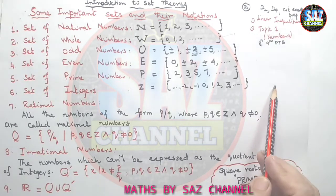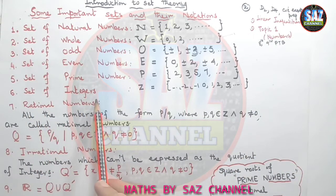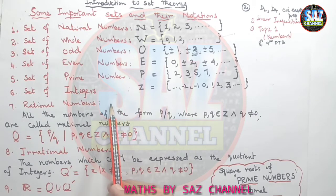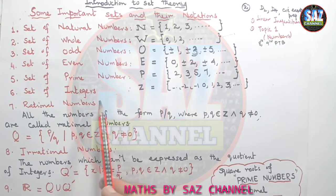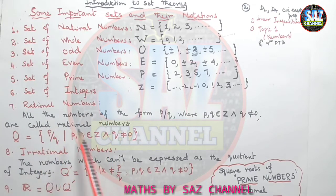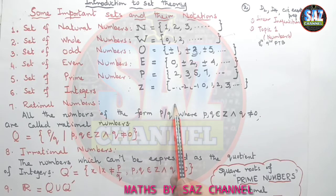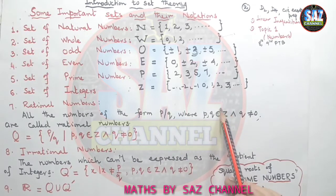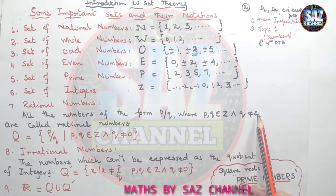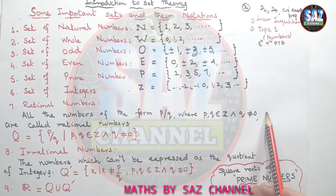Then coming to the next type of the numbers which are the rational numbers. What are the rational numbers? You have heard the word fractions. Rational numbers are the fractional numbers. They are the numbers of the form p over q where p and q belongs to member of integers and q should not be equal to 0.